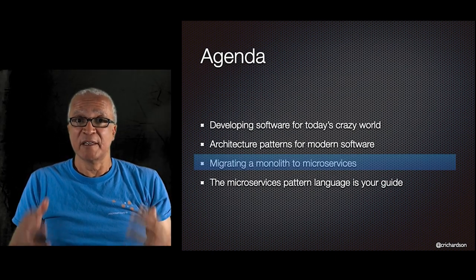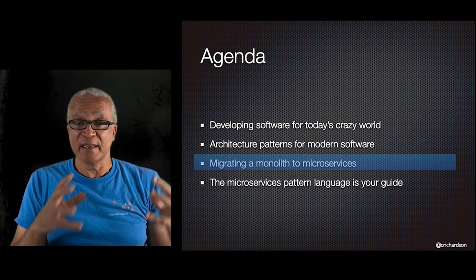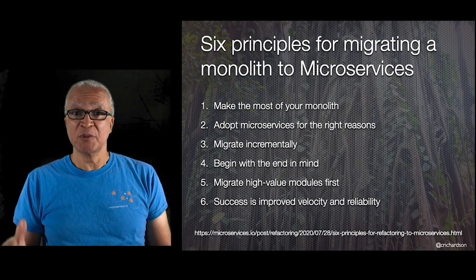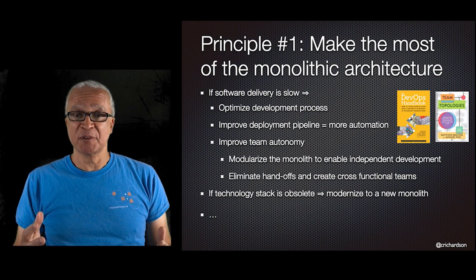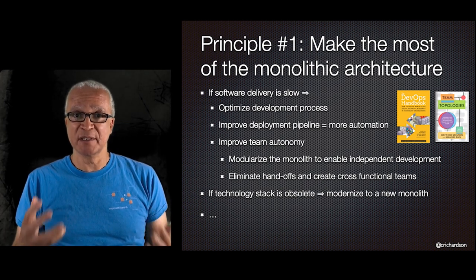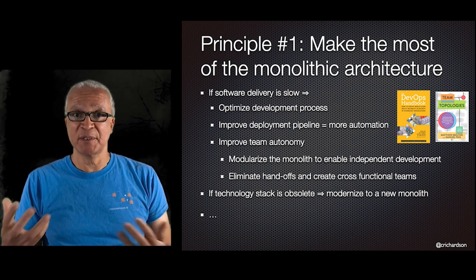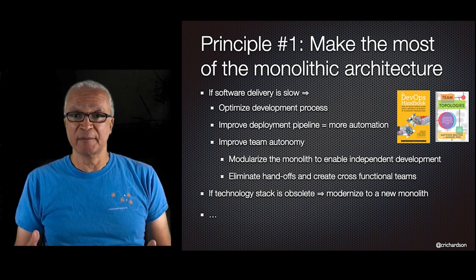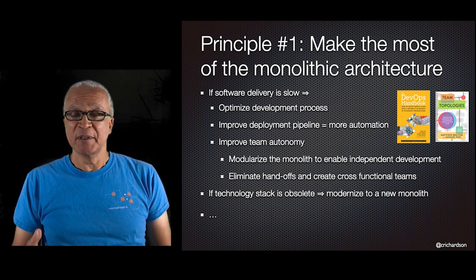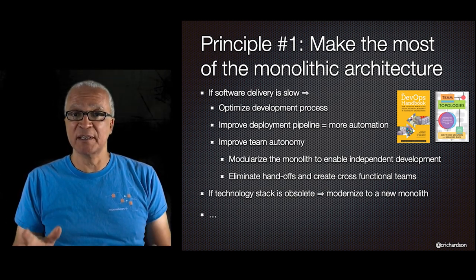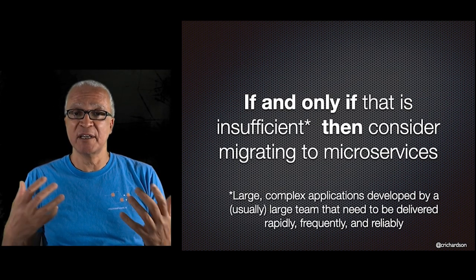How do you adopt the microservice architecture? There are six principles. The first is to make the most of your monolith — remember, it's not an anti-pattern. If software development is slow, improve your process first. Adopt DevOps, automate your deployment pipeline, read Team Topologies, and improve your organization. If your technology stack is out of date, don't automatically assume you should modernize to microservices — sometimes migrating to a modern monolith is sufficient.